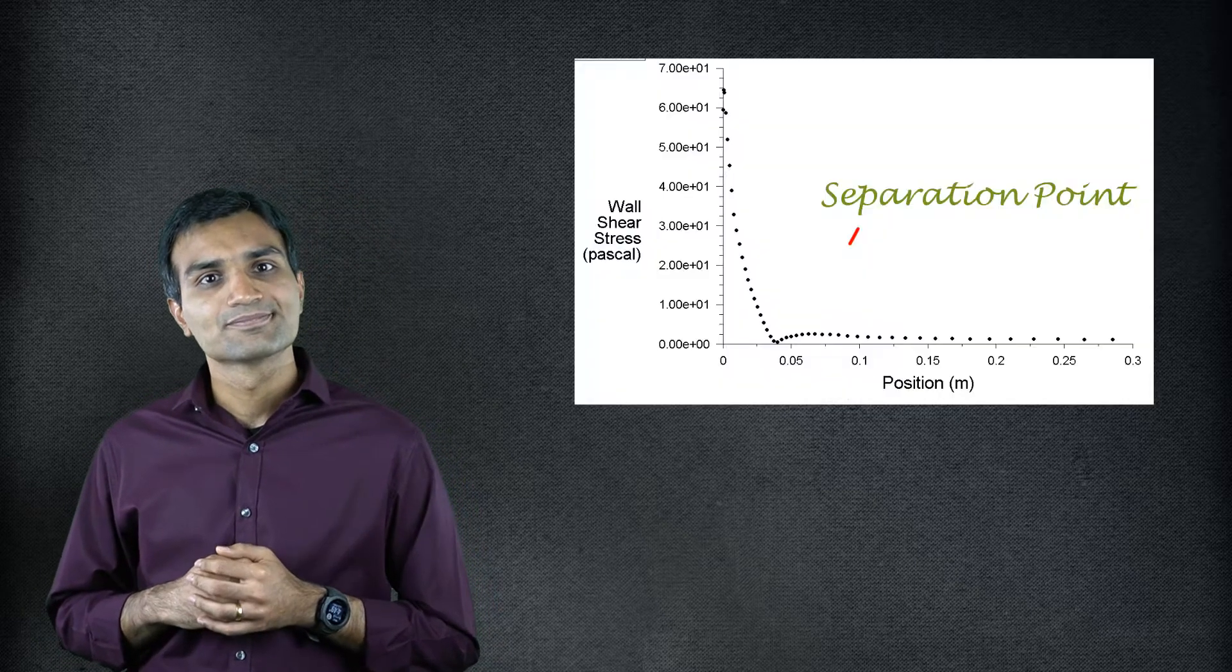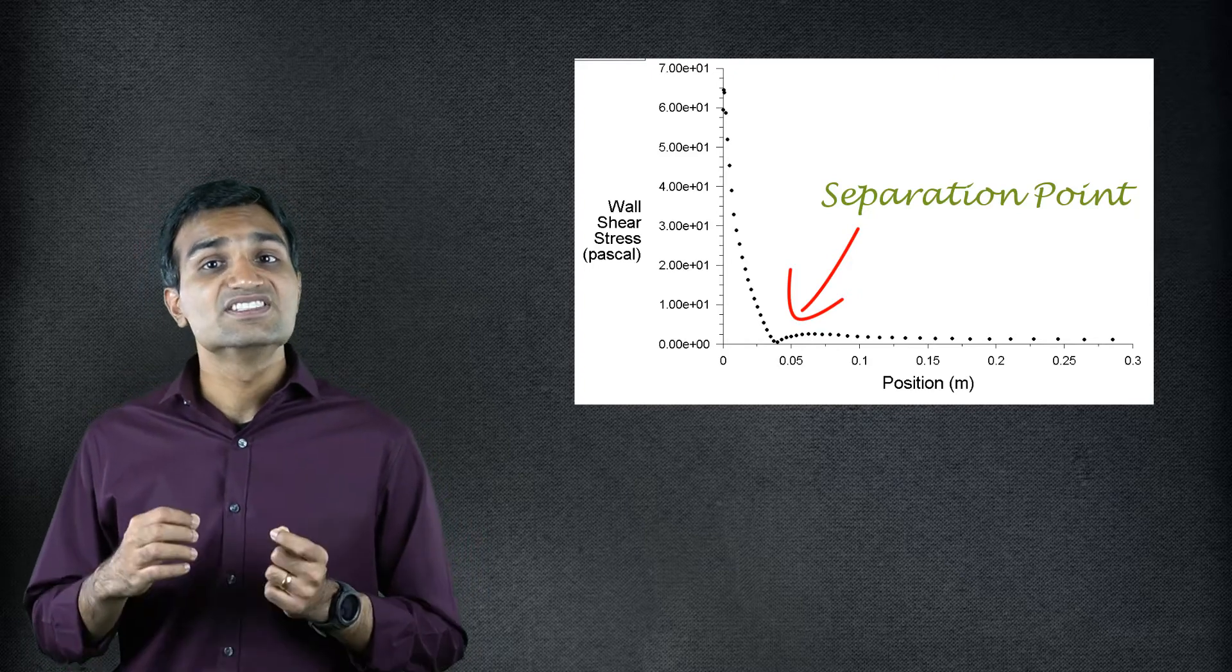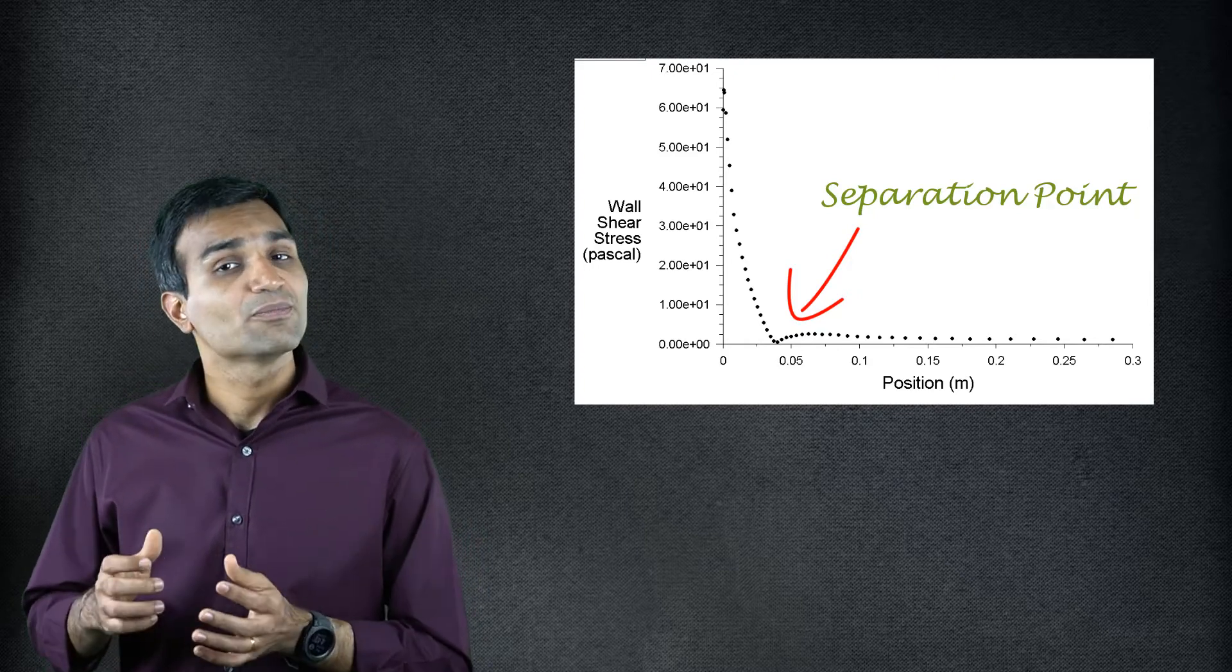A more precise way of predicting flow separation is to solve the boundary layer equations numerically under adverse pressure conditions. The point where the wall shear stress becomes zero is the location where flow separates. This numerical solution, however, requires some level of computer programming. The boundary layer equation is far easier compared to solving the entire set of Navier-Stokes equations. These numerical predictions are far more accurate compared to the approximate analytical solutions.